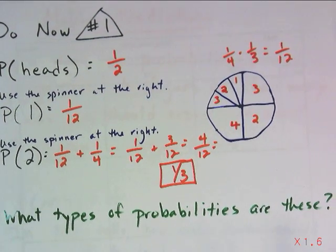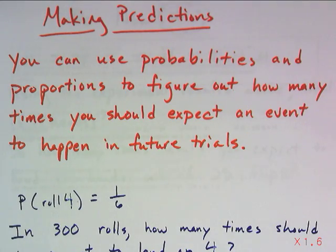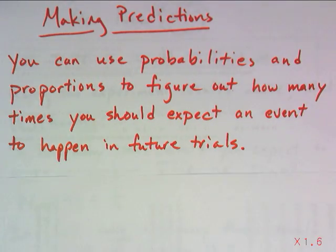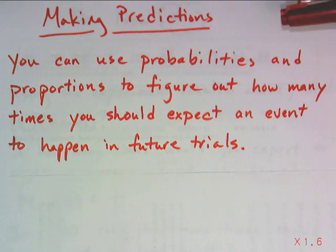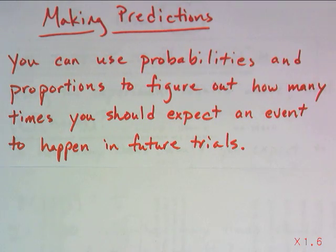Now, no matter what type of probability you find, we can use probabilities to make predictions. Actually, more specifically, we can use probabilities and proportions in order to make predictions. We want to take what we know about how often something is supposed to happen and then extend that to figure out how many times we should expect it to happen out of a certain number of future trials.